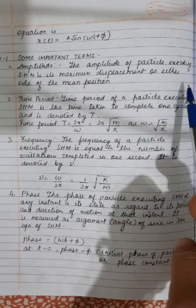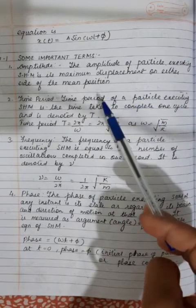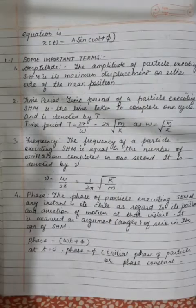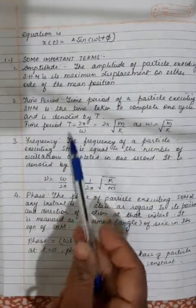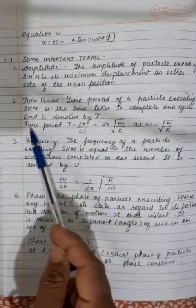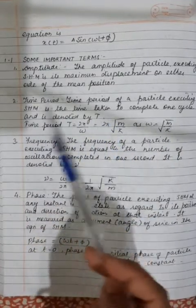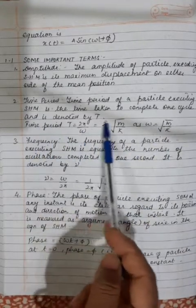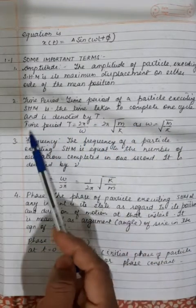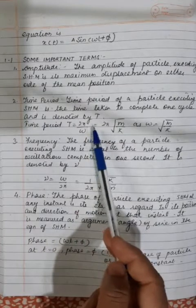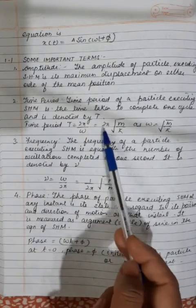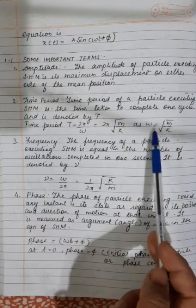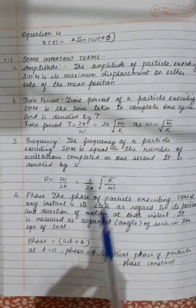Some important terms: Amplitude of a particle executing simple harmonic motion is its maximum displacement on either side of the mean position. Time period of a particle executing SHM is the time taken to accomplish one cycle, denoted by T. Time period T = 2π/ω = 2π√(m/k), where ω = √(k/m).